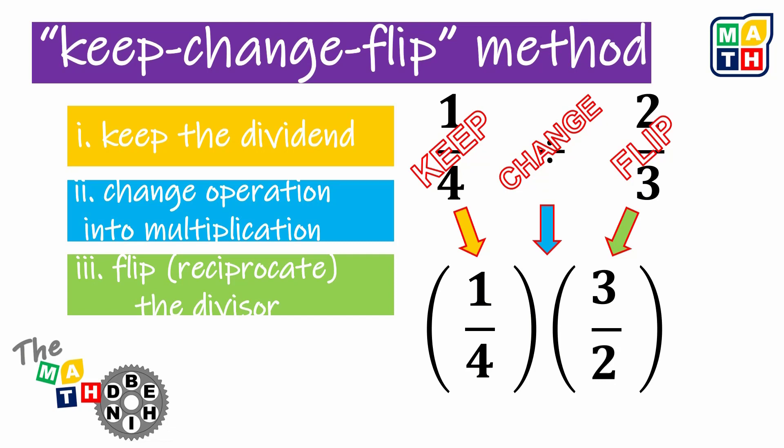If we are going to continue with this process, instead of dividing the fractions, we are just going to multiply the fractions. And again, when multiplying fractions, we are to multiply the numerators and the denominators separately. So 1 times 3 is 3, 4 times 2 is 8.